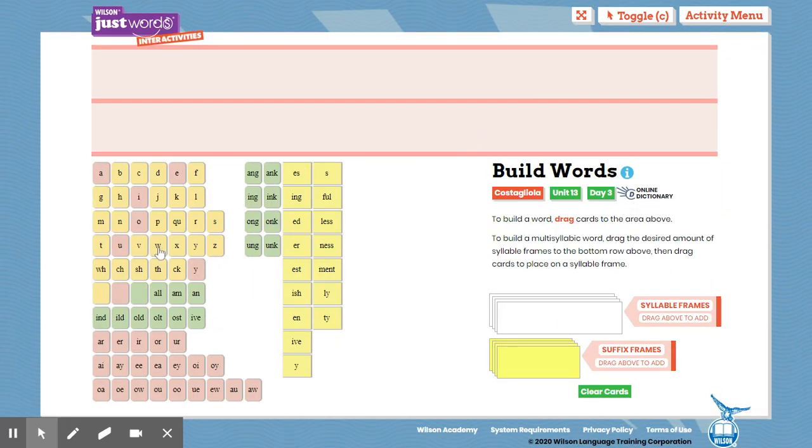Okay, the first word that I'm going to build. S, OU, T, H. Let's tap it out. S, OU, T, south. The word is south. Spell it away. S, OU, T, H.